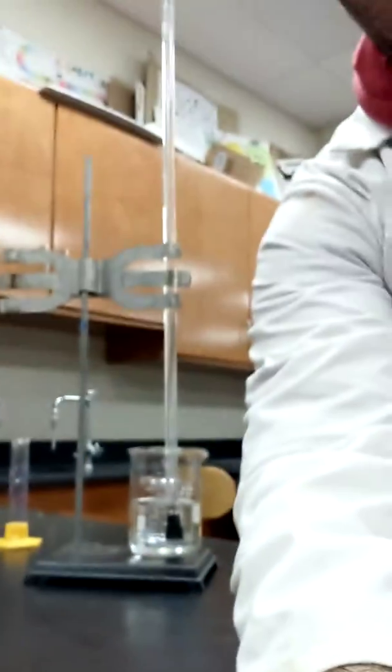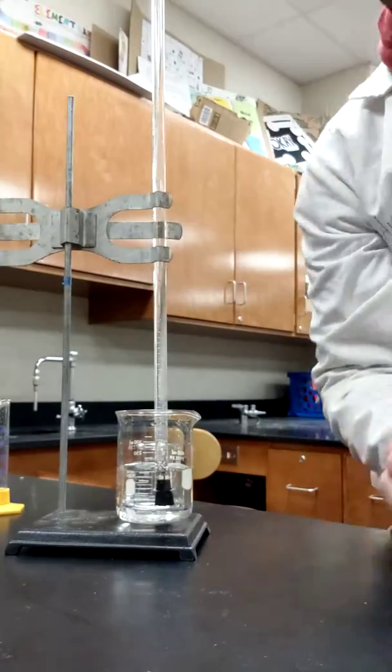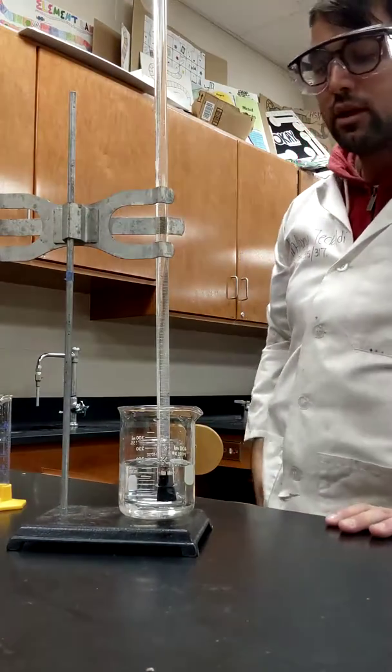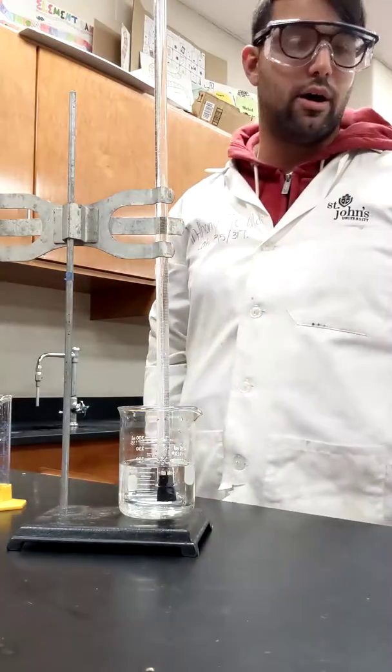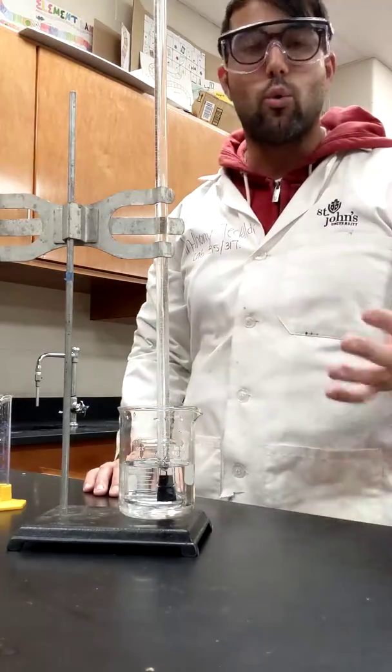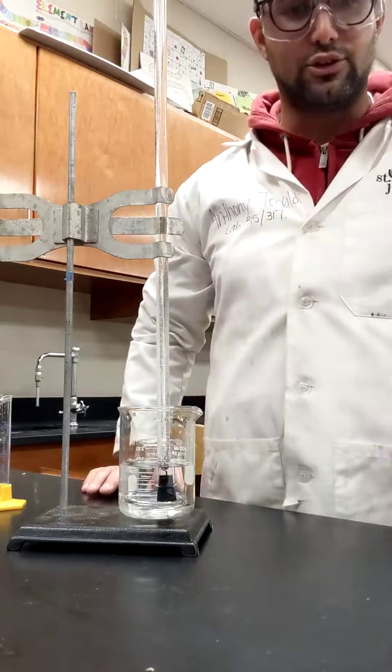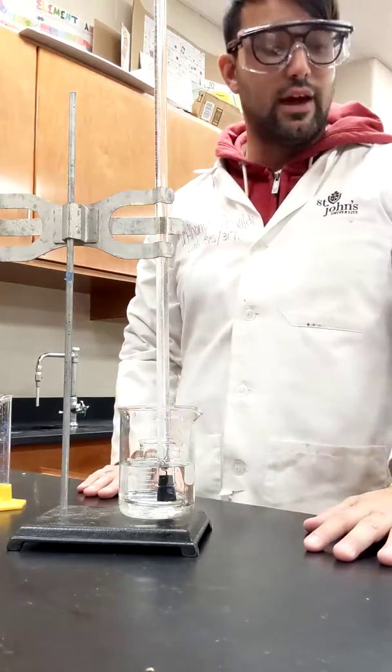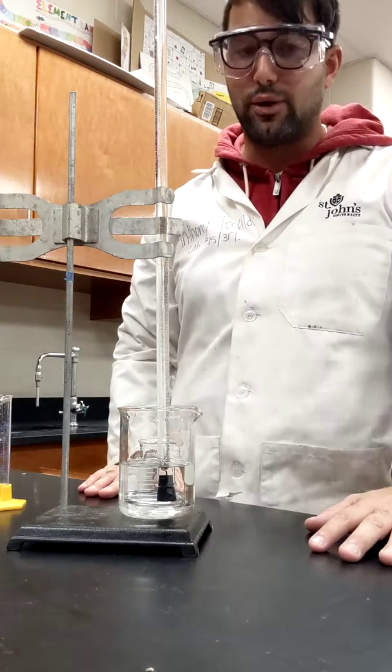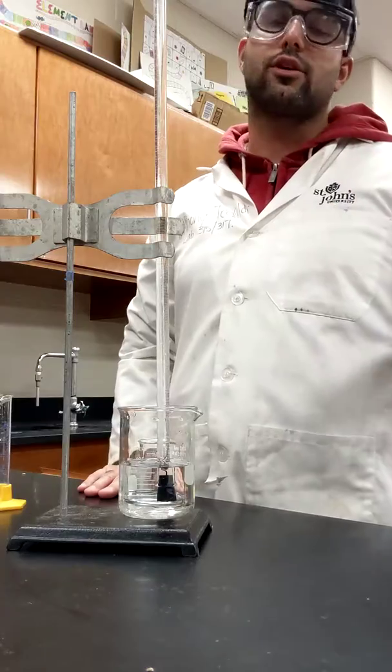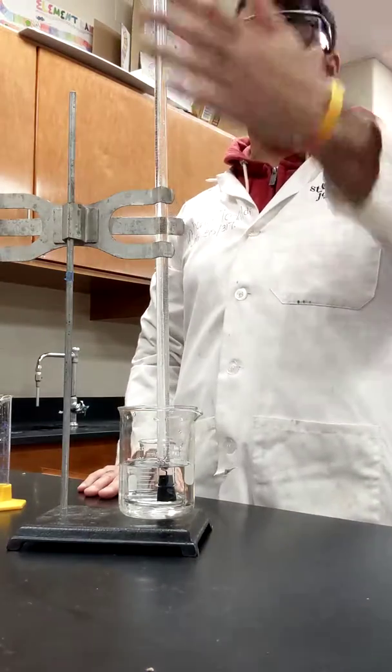You're also going to be looking up online the atmospheric pressure. You're gonna go to weatherchannel.com and you're gonna get the barometric pressure. It's gonna be in inches of mercury. You're gonna take that number and you're going to multiply by 25.4 and you're gonna get your millimeters of mercury. And then you have to convert that to atmosphere for the purpose of this lab.